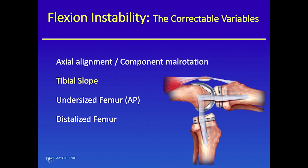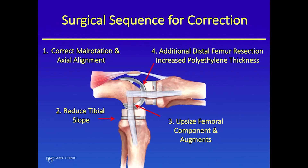If you're going to operate on these patients, you should go in with a plan. The plan is: ensure good axial alignment, correct rotation as needed, correct the tibial slope, address an undersized femur — in that sequence. So: correct malrotational alignment, neutralize the tibial slope, increase the size of the femur as much as possible, and if you still have an imbalance, ride the joint line up with a thicker poly to achieve a tight extension and flexion gap.